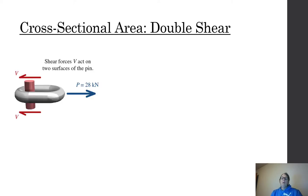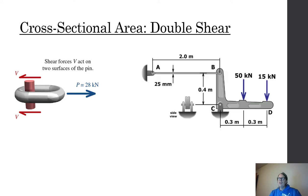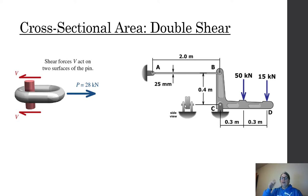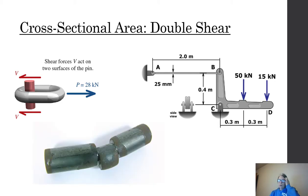Double shear is like a chain link pulled across — it must shear through two areas: above and below. A double-pinned connection requires shearing through two sections of the bolt. The shear stress formula becomes τ = V/(2A) because the area is doubled, doubling the capacity. A double shear failure produces three pieces because you've cut through two cross-sections.